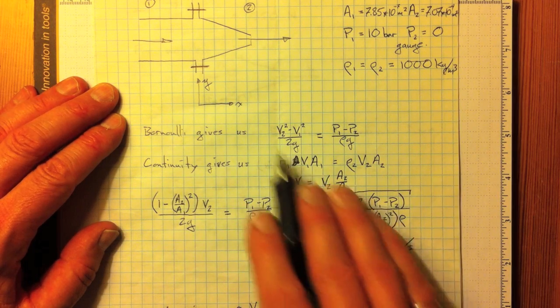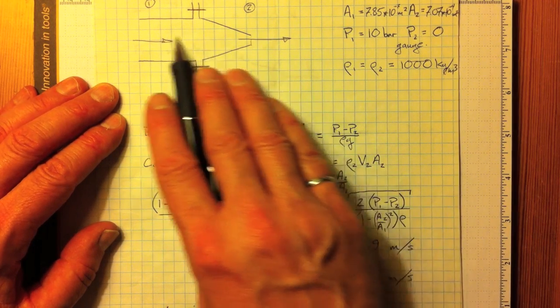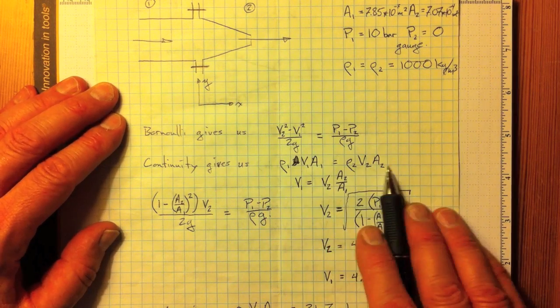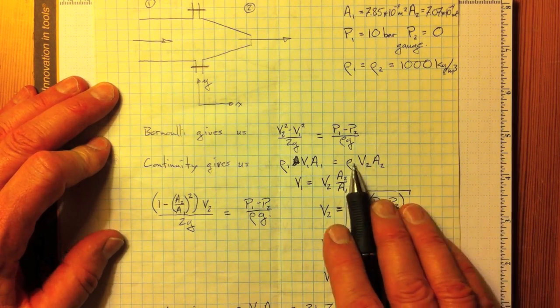Continuity tells us that the mass flow at 1, rho 1 V1 A1 must be equal to rho 2 V2 A2 because the flow is incompressible and steady.